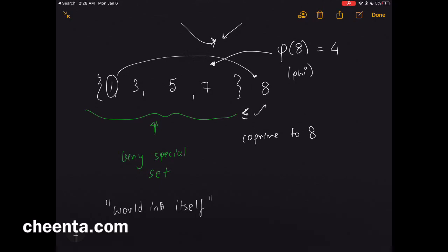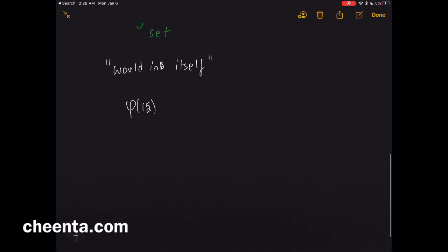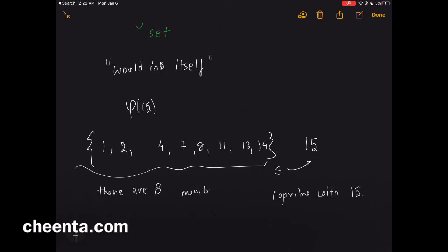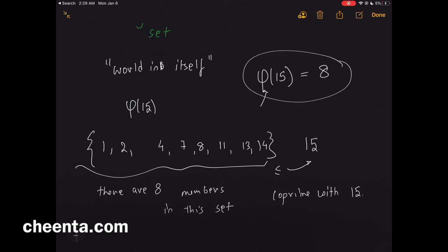Let's compute phi of 15. You take the number 15, look at all numbers less than or equal to 15 and co-prime with 15. Those are: 1, 2, 4, 7, 8, 11, 13, and 14. The number of members in this set is 8, so phi of 15 is 8. That's how the phi function is defined — this is known as the Totient function.